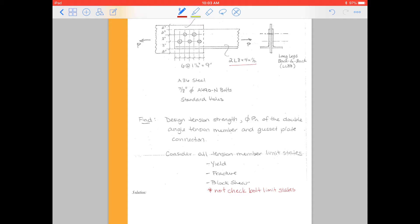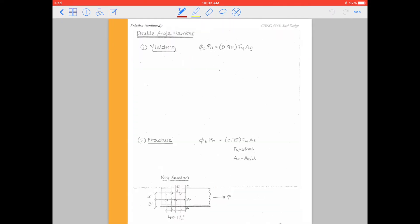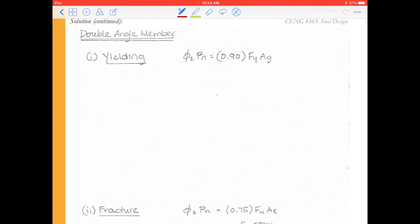Alright, so as we look at this design, we can first enter our yielding. So hopefully yielding has become relatively a second nature calculation for you. So we come in, our capacity is φPn. φ here, our reduction factor is 0.90. We're given that for an angle member, the preferred classification is A36 steel, and that means Fy is 36 ksi. And we can look up the gross area of the member.